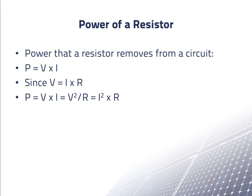Since the voltage is equal to the current times the resistance of the resistor, we find that the power is also the voltage squared divided by the resistance or the current squared times the resistance.